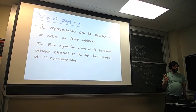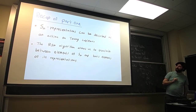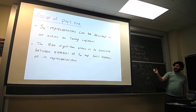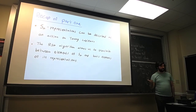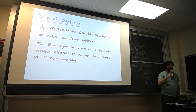To recap: we have the symmetric group representations, which can be described as an action on Young tableaux. The RSK algorithm allows us to translate between elements of the symmetric group and the basis elements of these representations. I'll pause here — any questions about the representation theory of the symmetric group?